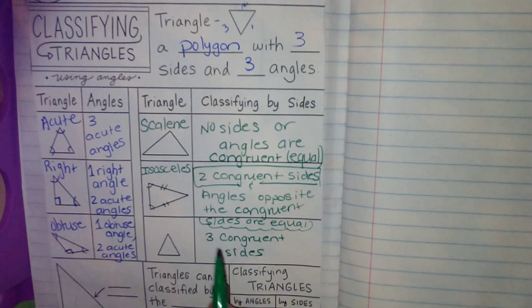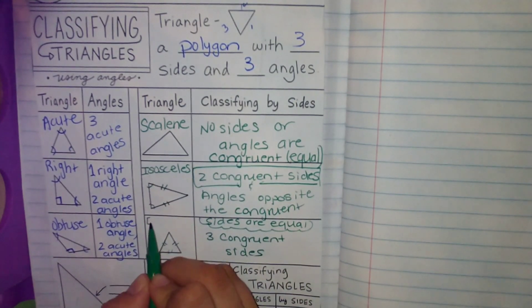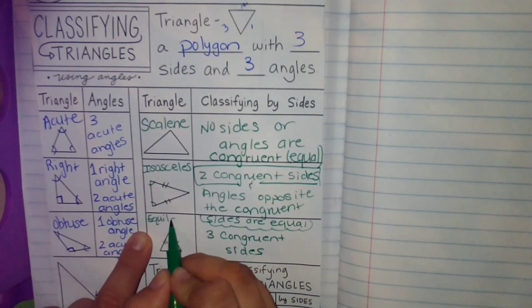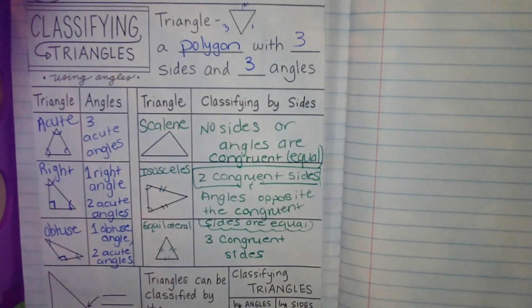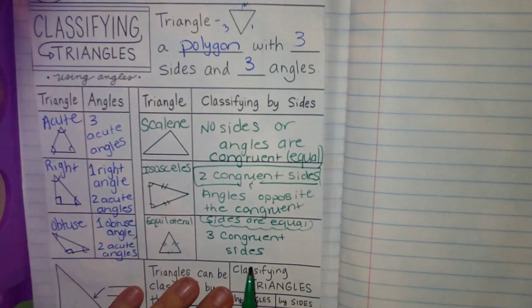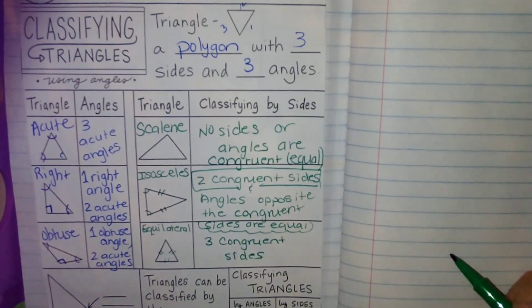So it is called an equilateral triangle, which makes sense because everything is equal. Lateral meaning lines, equal lines, that can help us figure out using different root words, figure out what that word means. So all the sides, the three congruent sides, and the angles are also the same.